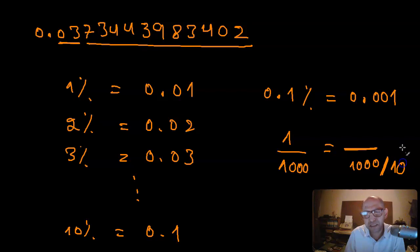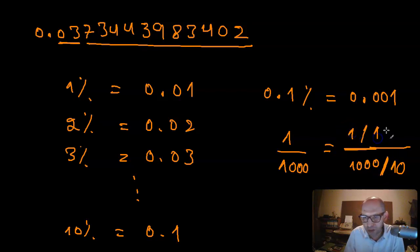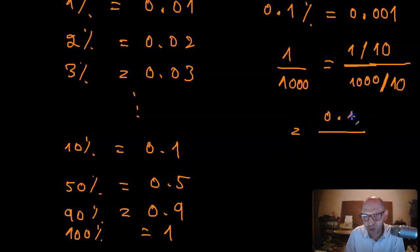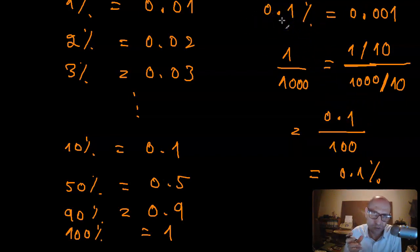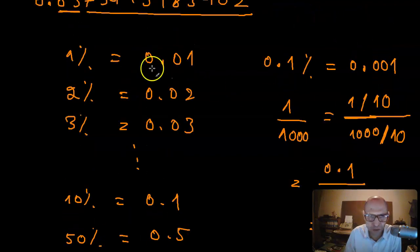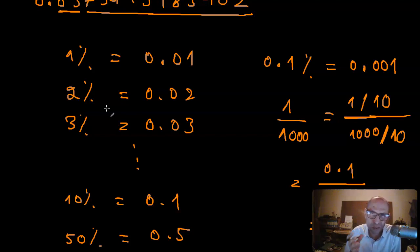To convert: divide 1000 by 10 to get 100, and do the same to the numerator — 1 over 10 is 0.1. So that's 0.1 out of 100, which is 0.1 percent. However, that level of precision isn't necessary here, since I only care about values like 1%, 2%, 3%, 5%, 10%, or 20%.